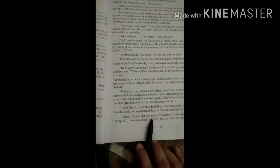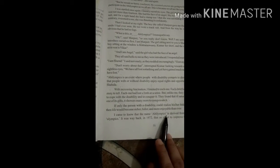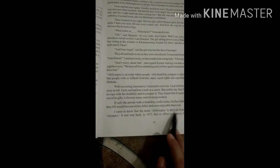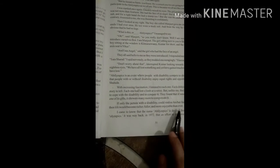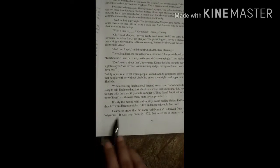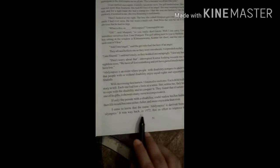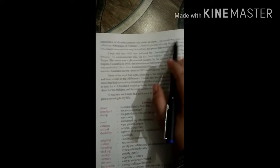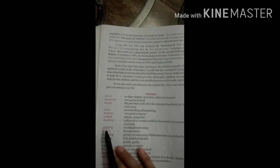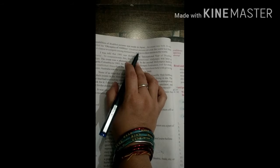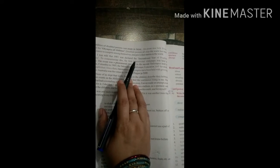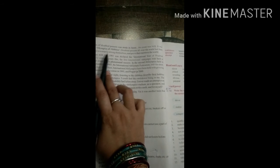I came to know that the name Abilimpics is derived from the words Ability and Olympics. Ability means capability. It was way back in 1972 that an effort to improve the vocational capabilities of disabled persons was made in Japan. An event was held. It was called the Olympics of Abilities.